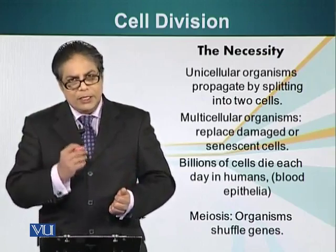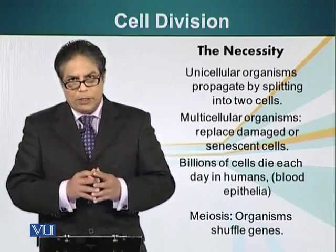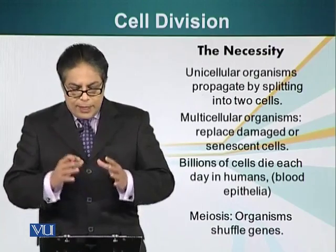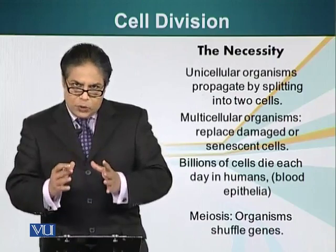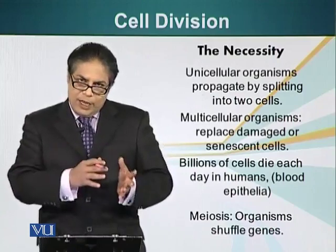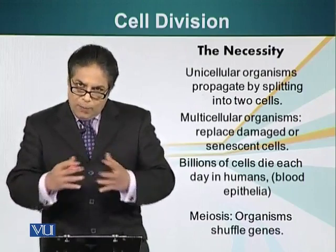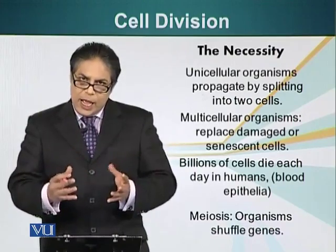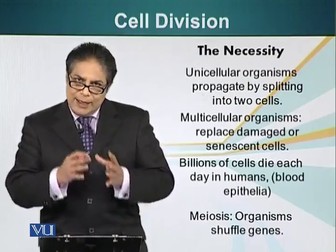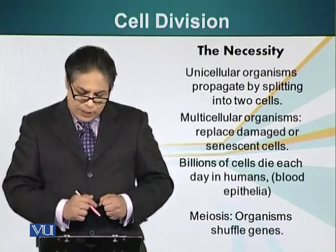Additionally, a special type of cell division called meiosis — we will talk about this process in more detail later on — ensures that organisms shuffle their genes, allowing different combinations and allowing natural selection to take place, selecting organisms with the best combination of genes.